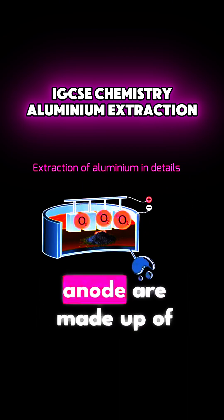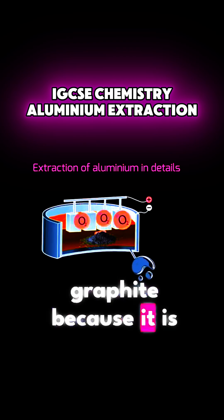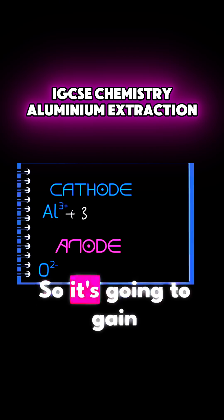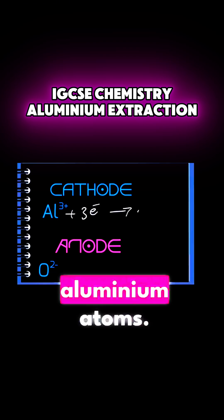Both the cathode and anode are made up of graphite because it is inert. At the cathode, the aluminium is going to gain electrons, that is reduction. So it's going to gain three electrons to form aluminium atoms.